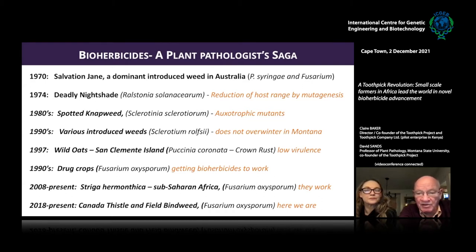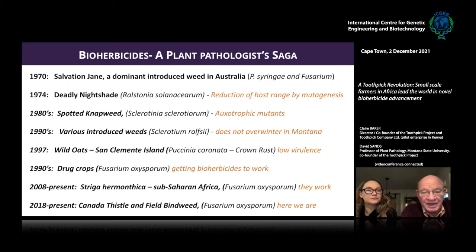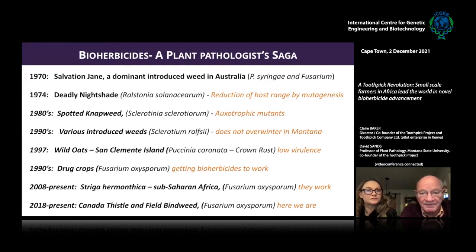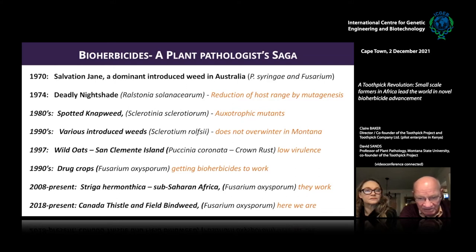Our biggest problem was that every plant pathologist has probably seen a diseased weed, and the disease is usually a fungus, bacterium, or virus — but generally they don't kill. They have low virulence. Why would a pathogen want to kill its only host?